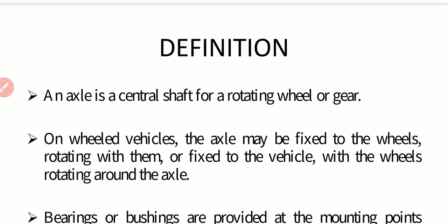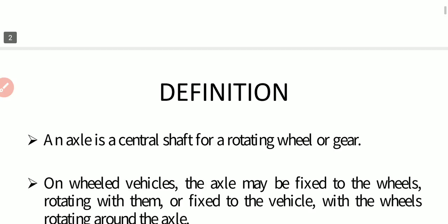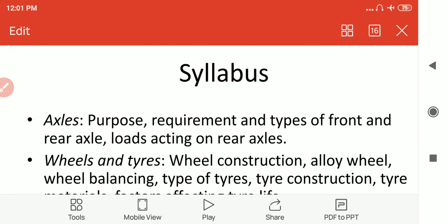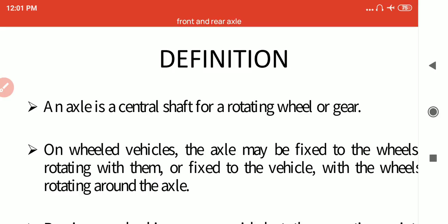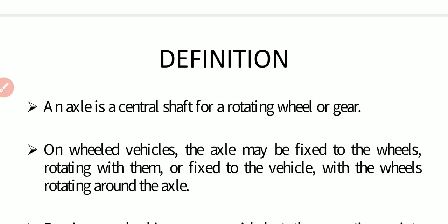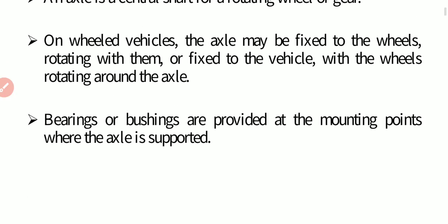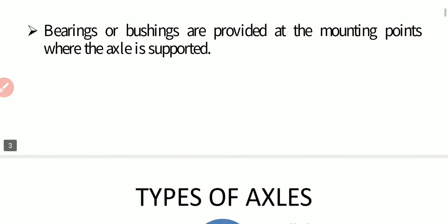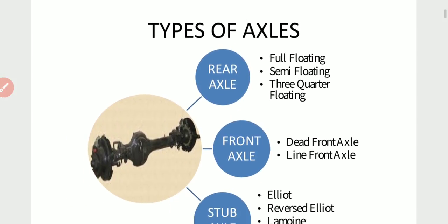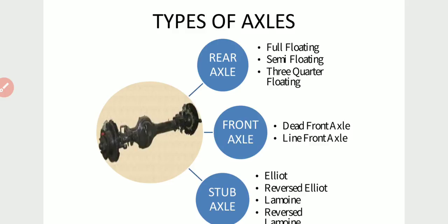Next point is axle. An axle is a central shaft for rotating a wheel or a gear. On a wheeled vehicle, the axle may be fitted to the wheels rotating with them, or fixed to the vehicle with the wheels rotating around the axle. Bearings or bushings are provided at the mounting points where the axle is supported. The types of axle are: first is rear axle, with subtypes full-floating, semi-floating, and three-quarter-floating; second is front axle, with subtypes dead front axle and live front axle; third is stub axle with four subtypes.